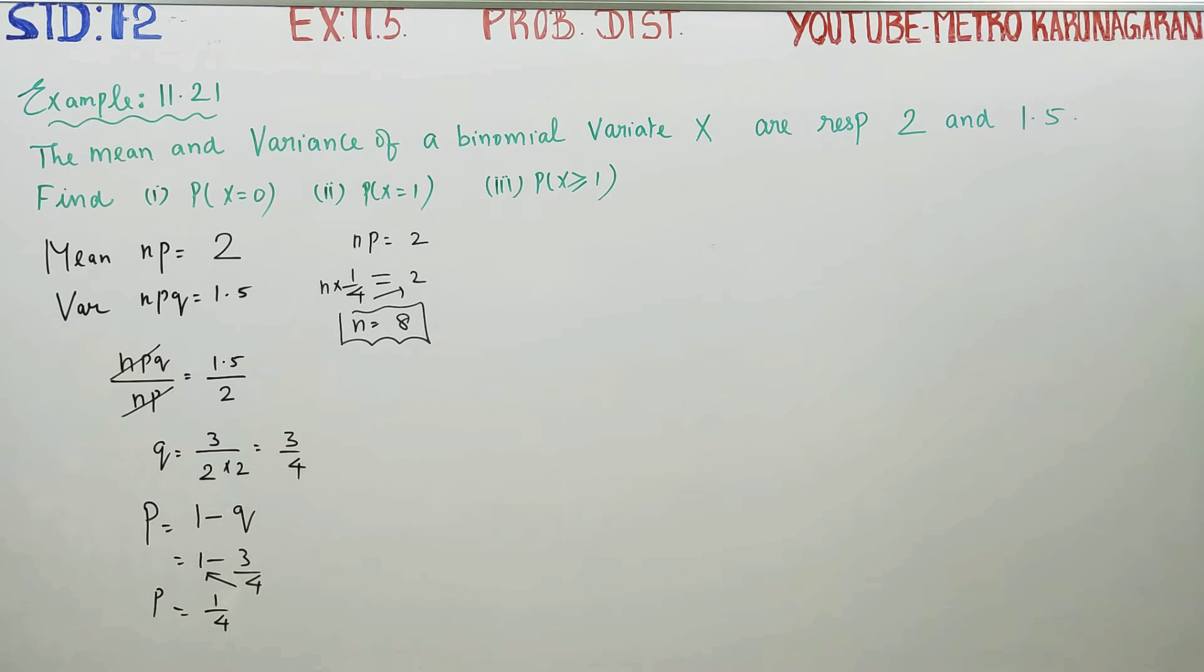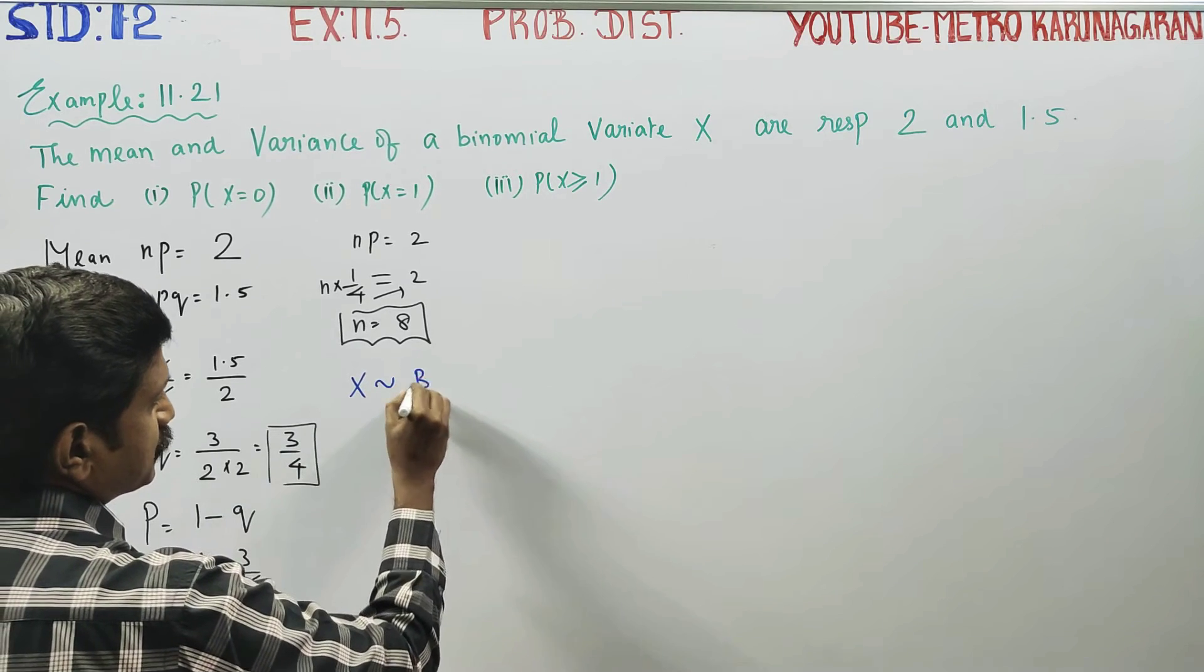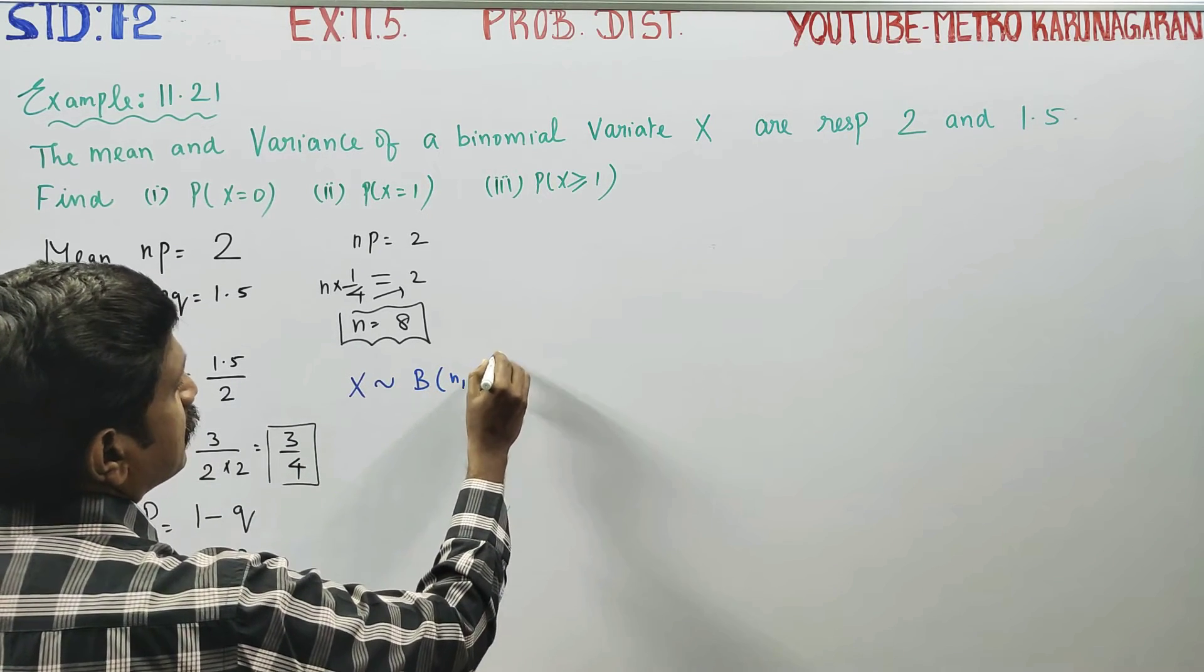n ready, p ready, q ready. This is the answer. First question is probability of x is equal to 0. x follows binomial distribution with the parameters n and p.